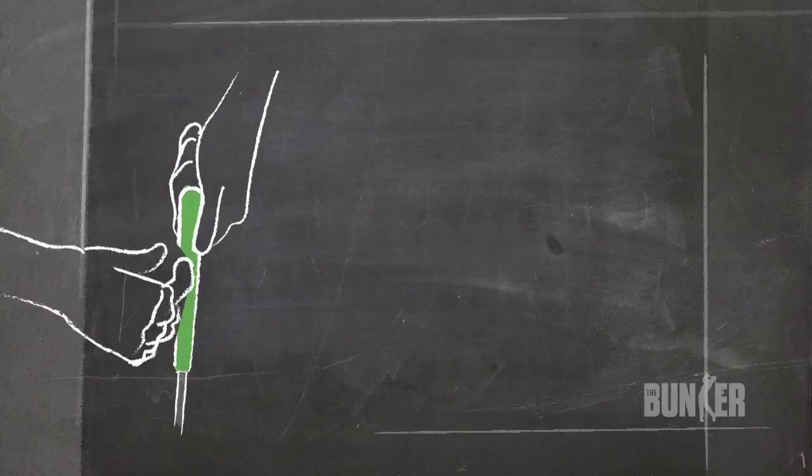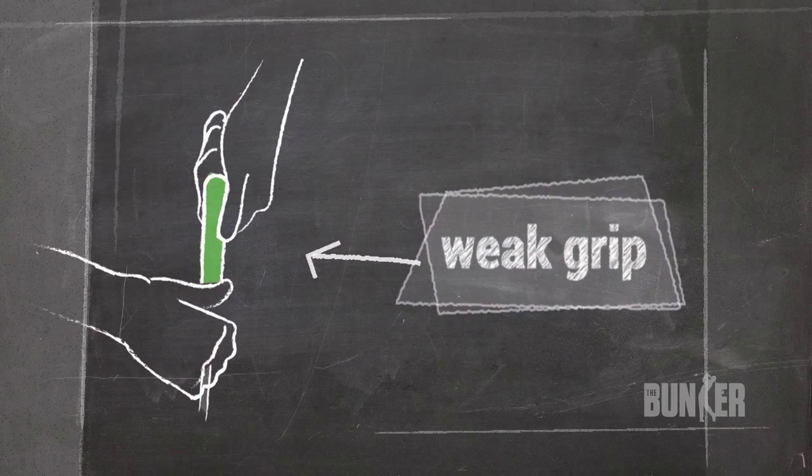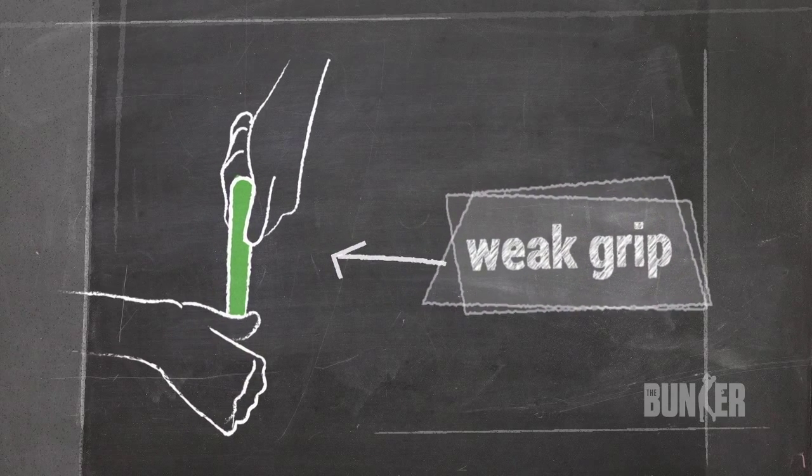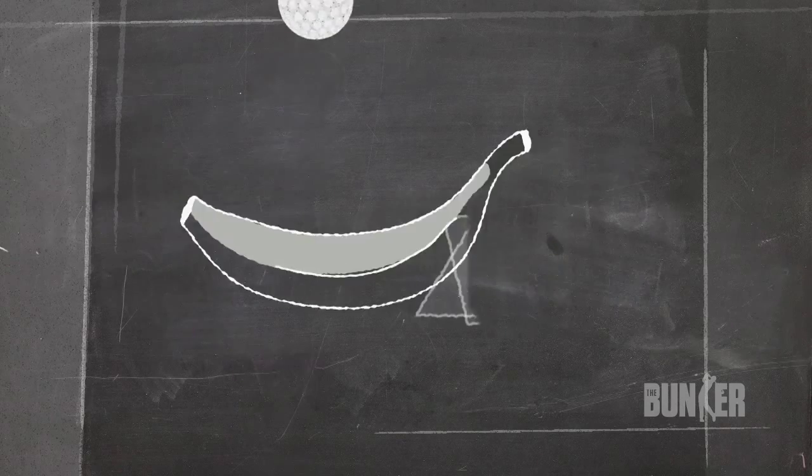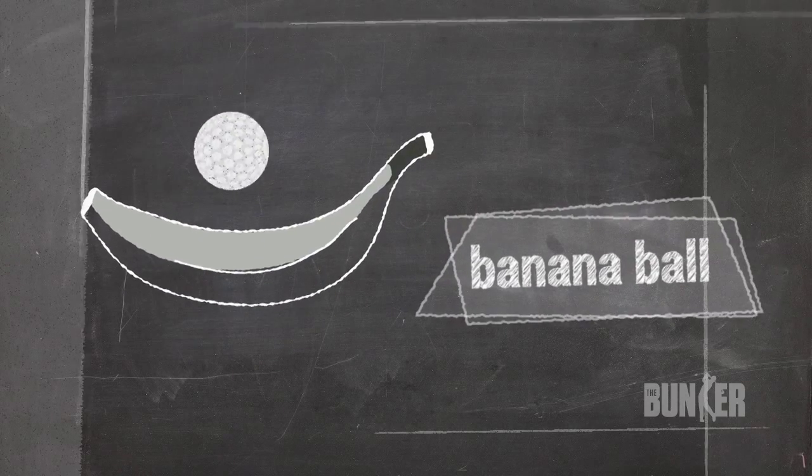And what causes an open face? Weak grip is one of the worst offenders. If your left hand or non-dominant hand grips below the club, you'll have no stability and it's likely you'll produce that dreaded banana ball.